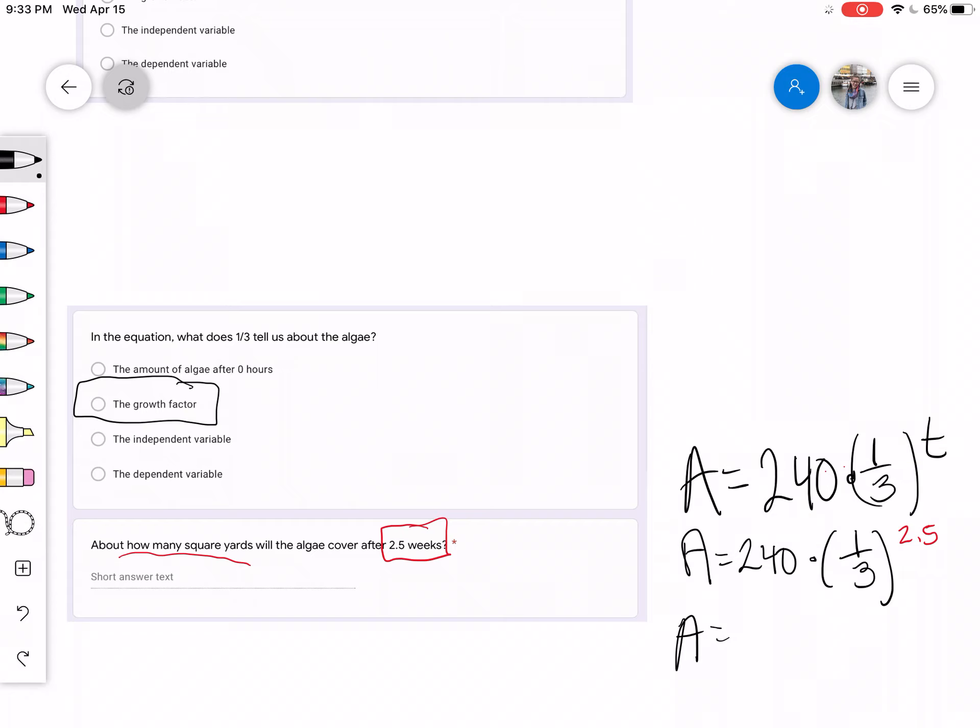So right here, if we do one divided by three raised to the 2.5 power, or one-third raised to the 2.5 power, we would have 240 times 0.64. Then we would do times 240, and then we get area equals 15.39 yards squared. So that is your answer.